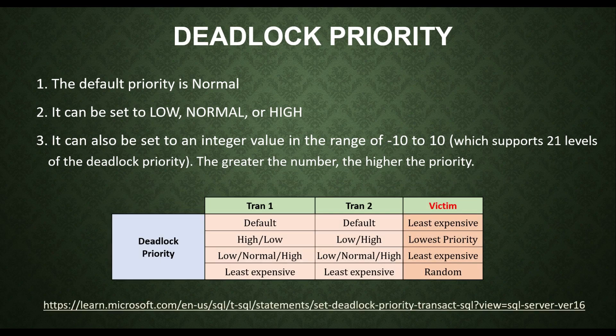The higher deadlock priority wins and the lower priority one becomes the deadlock victim. If transaction 1 and transaction 2 are both having the default priority level — which is normal — then SQL Server will choose the least expensive transaction as the deadlock victim.